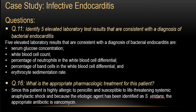Five elevated lab test results consistent with the diagnosis of infective bacterial endocarditis: elevated serum glucose concentration due to stress from infection, which also makes it harder to control blood glucose in this type 2 diabetic patient; elevated white blood cell count; elevated neutrophils; elevated band cells (immature white blood cells); and elevated ESR. All these elevated lab tests are consistent with the diagnosis of bacterial endocarditis.